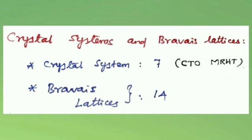The next topic is crystal systems and Bravais lattices. Based on crystal parameters, crystal systems are divided into 7 types by considering only primitive arrangement. There are 14 crystal lattices possible with all types of unit cell arrangements, which are called Bravais lattices.